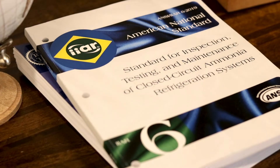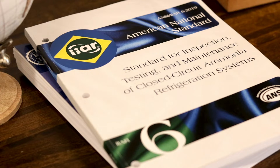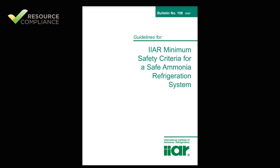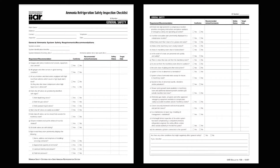The checklists contained in IIAR 6 Appendix B are derived from a legacy document named IIAR Bulletin No. 109. For years, the Bulletin 109 checklists, or B109s, served as the gold standard for documenting annual mechanical integrity inspections for ammonia refrigeration equipment.